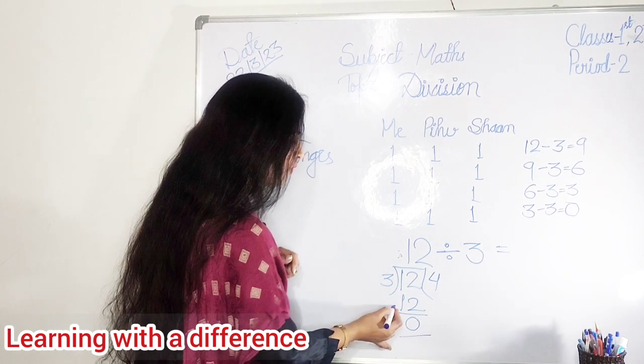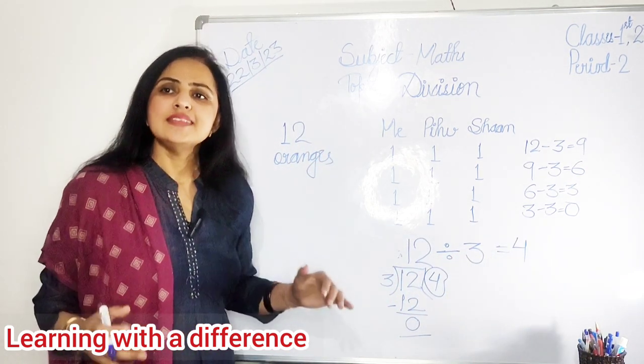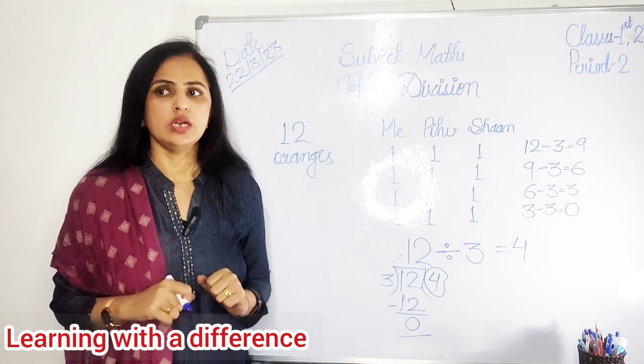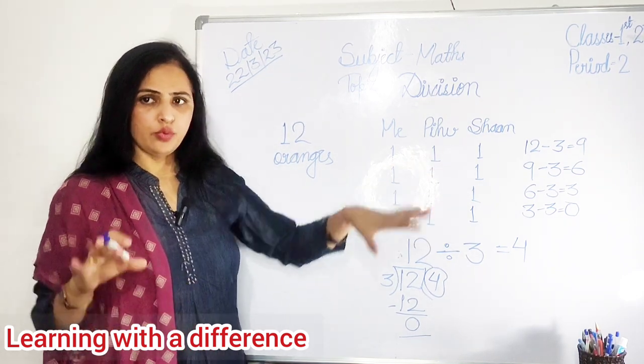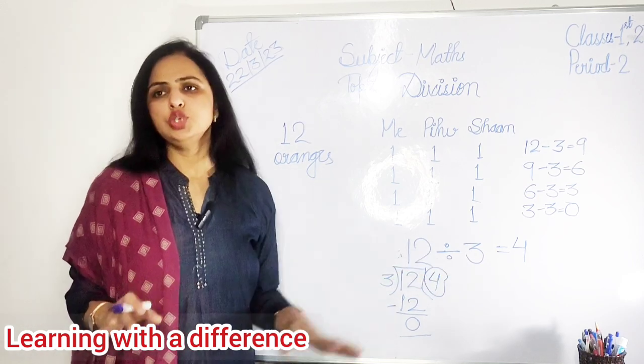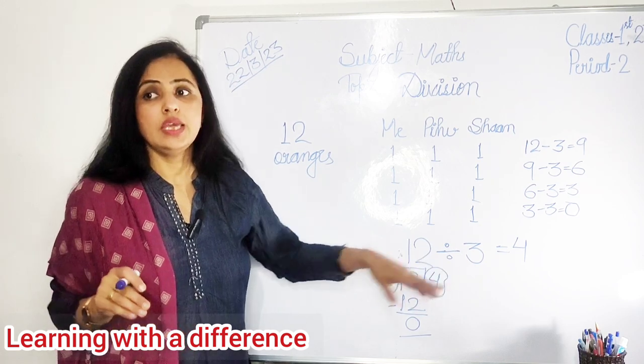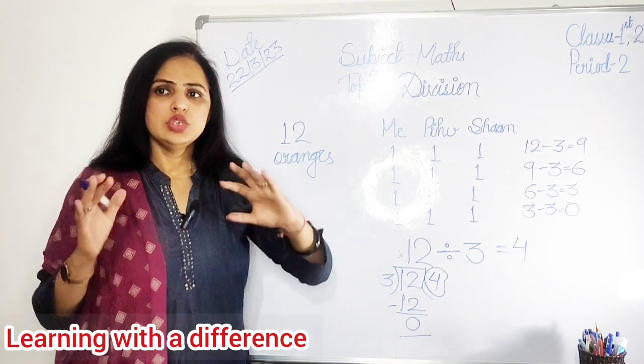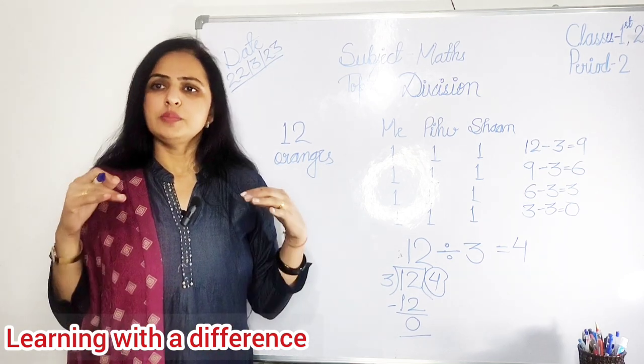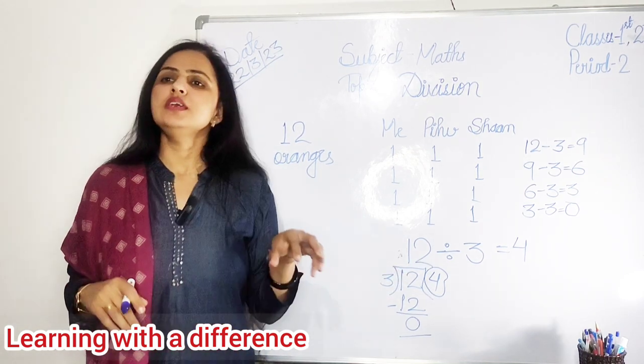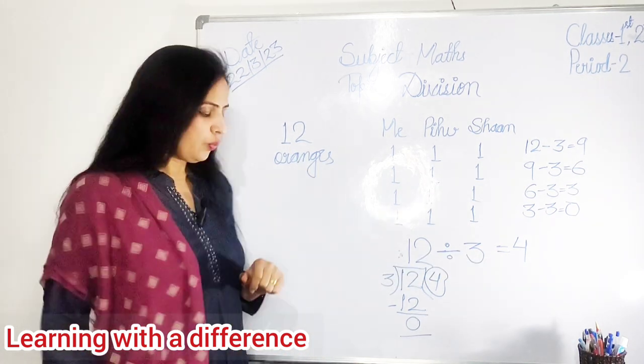It is zero, four will be here. Ham aise bhi problem ko sort out karte hain. Yeh tarika hai, aapko clear hua? Aur ham is tarike se bhi sort out karte hain. This is we call division. Aur yeh division ka symbol hota hai. Yeh aapko yaad rakhna hai. Just like hamne addition kiya hai, subtraction kiya hai, multiplication kiya hai. Same as yeh division hai. Understood? Sabko clear ho gaya hai. Very good.